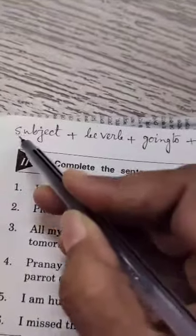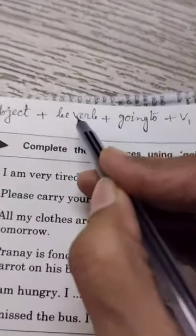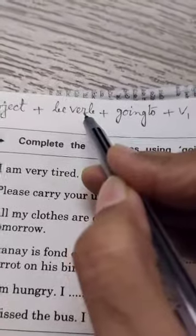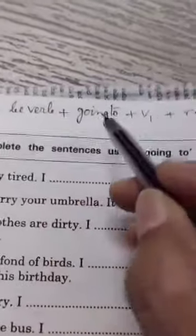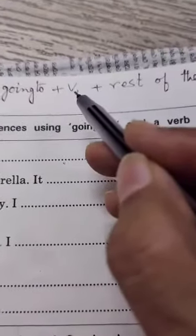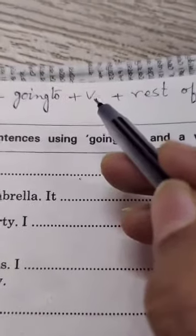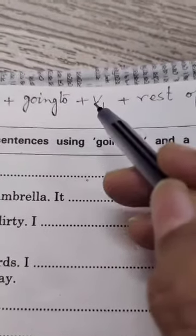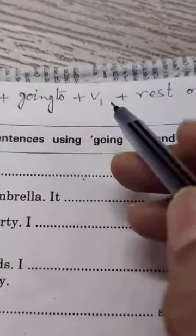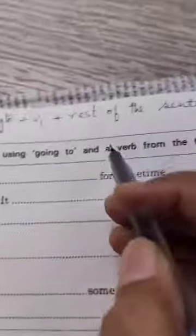Children, now we will learn how to form a sentence using going to. At first, we will write the subject, then be verb — means am, is, are, was, were. These are be verbs. Then going to, then V1, means the first form of verb, like run. Run is the first form of the verb. Then the rest of the sentence.